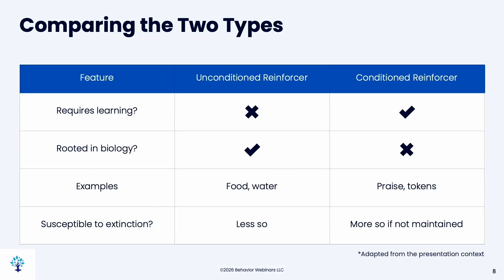To summarize: unconditioned reinforcers need no learning and are rooted in biology — examples are food and water. Conditioned reinforcers require learning and are not biologically rooted — examples are praise and tokens. They also differ in how susceptible they are to extinction.